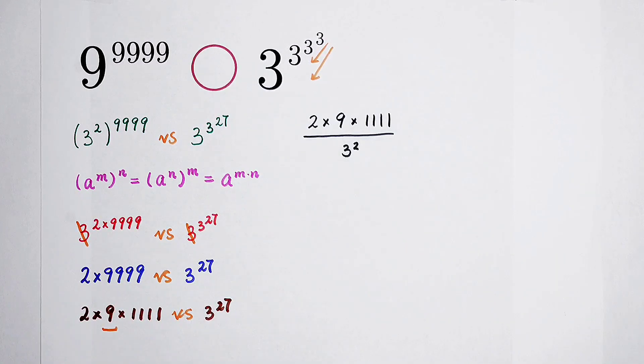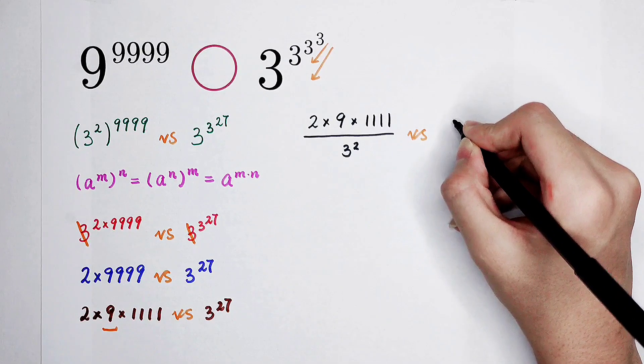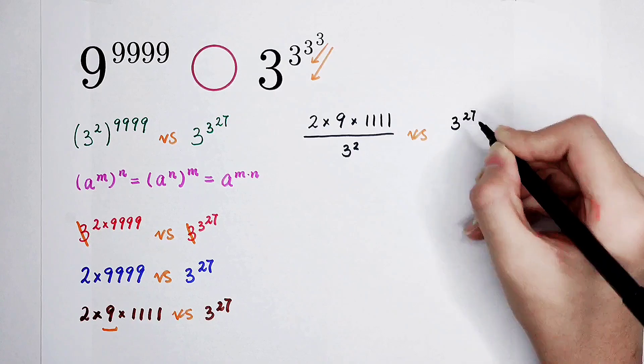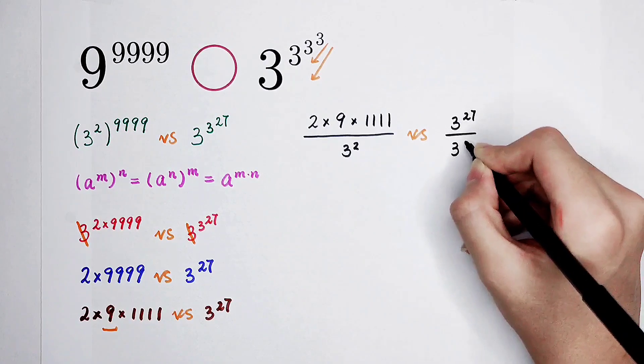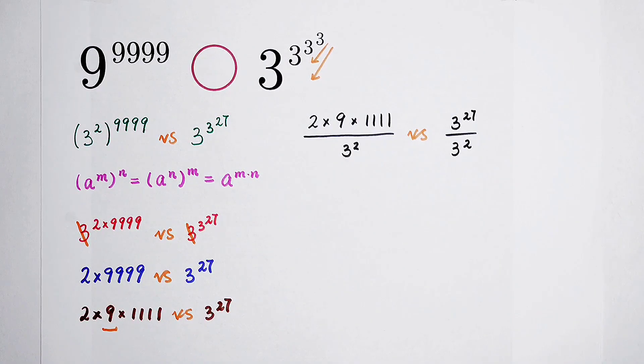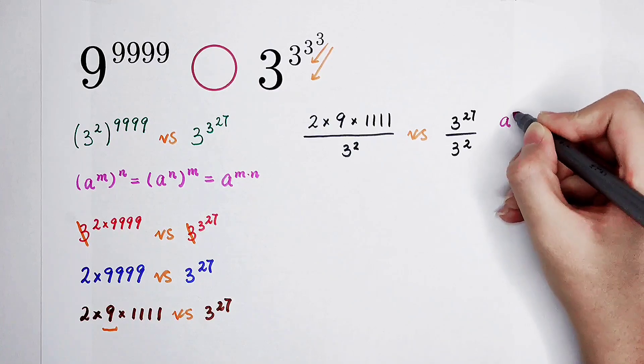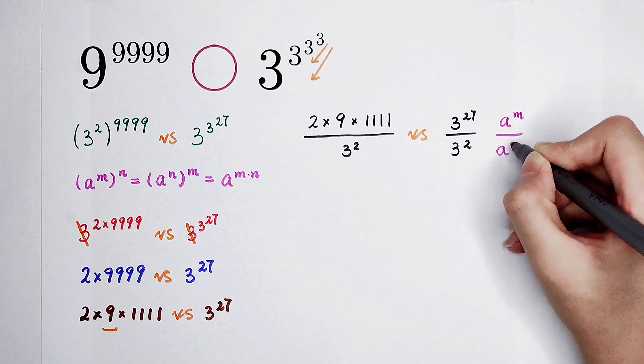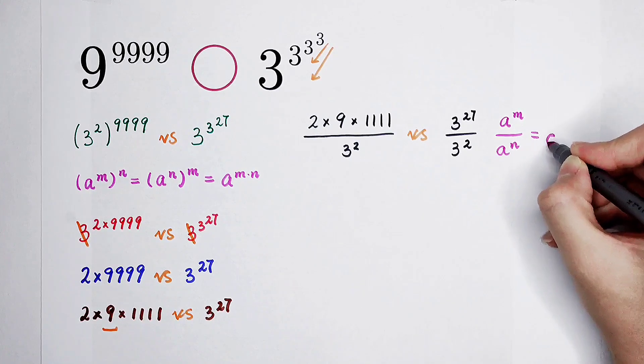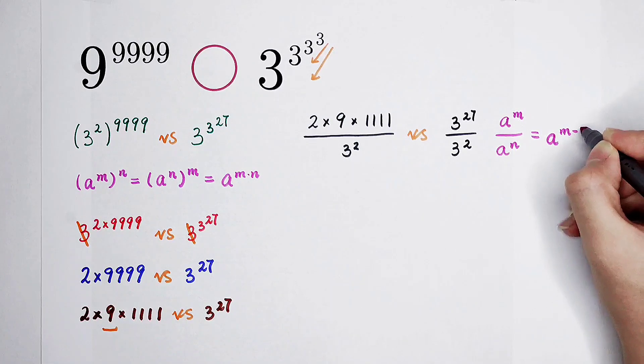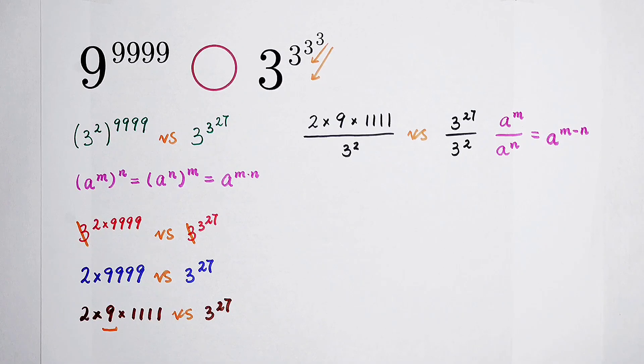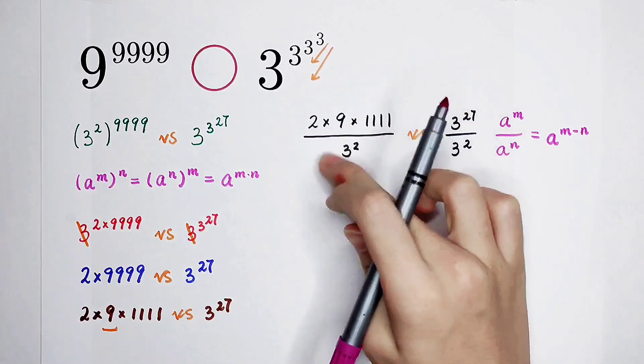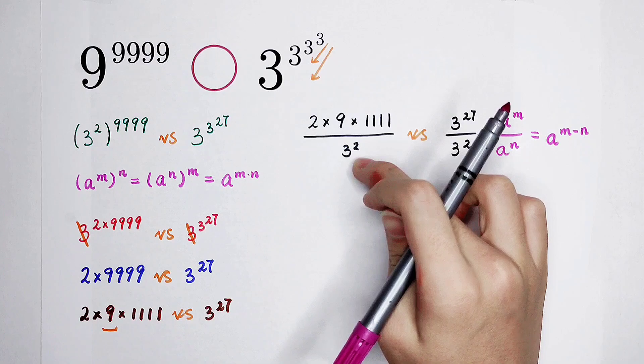Because 3 squared is just 9. And for the right hand side, 3 to the power of 27 divided by 3 squared. And now use this formula: a to the power of m divided by a to the power of n is equal to a to the power of m minus n. 9 is on the numerator and 3 squared, 9 on the denominator, so they can be canceled.